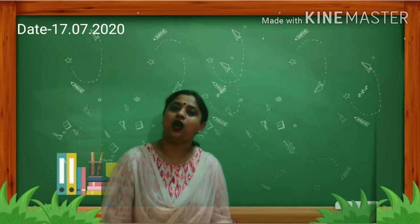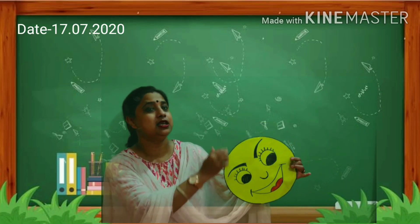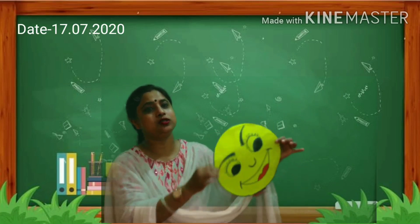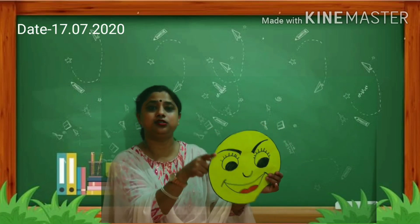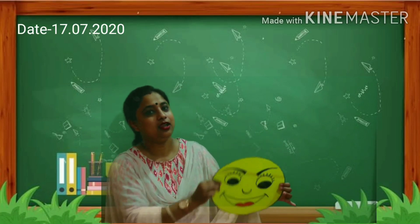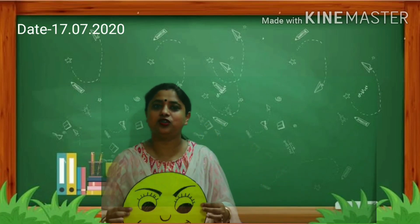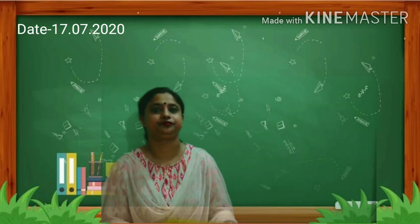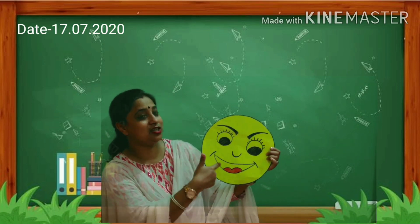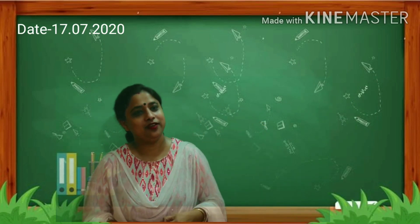Now let's sing the rhyme: This has no sides, no sides, no sides. This shape has no sides, it has no corners too. This is a circle, circle, circle. This is a circle. Now say bye-bye to circle. Bye, circle!